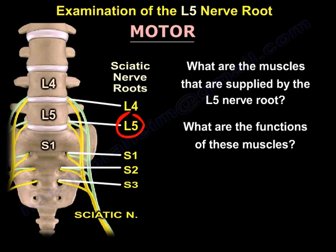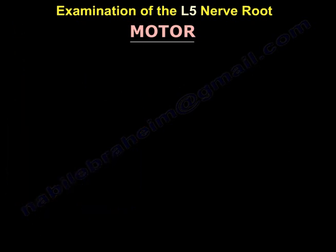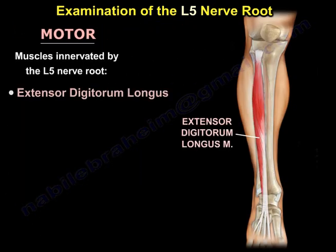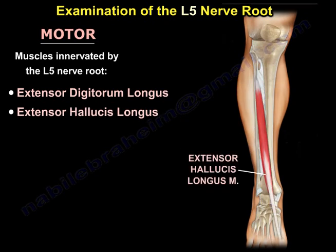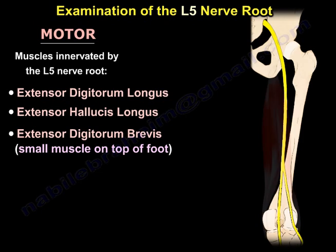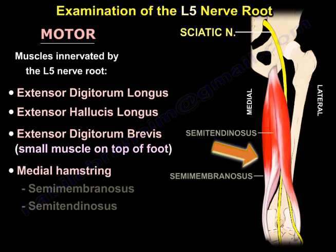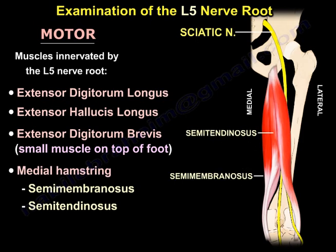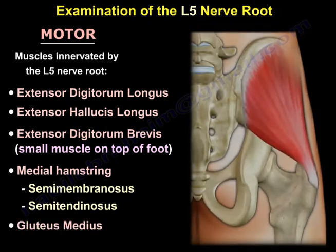For motor examination: what are the muscles supplied by the L5 nerve root? The L5 nerve root supplies the extensor digitorum longus, the extensor hallucis longus, and the extensor digitorum brevis, which is a small muscle on the top of the foot. It also supplies the medial hamstring — the semimembranosus and semitendinosus — and the gluteus medius.